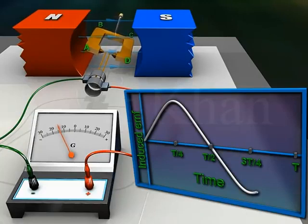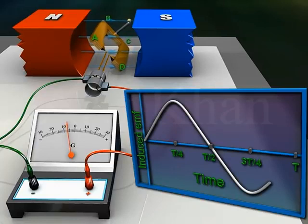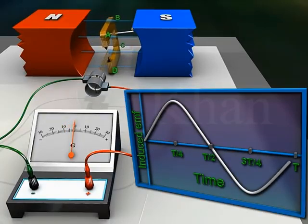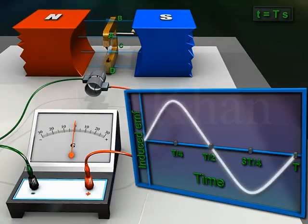During the fourth quarter rotation, the induced EMF decreases and becomes zero momentarily at time T seconds as the armature is vertical once again. So the magnitude of the induced EMF is sinusoidal.